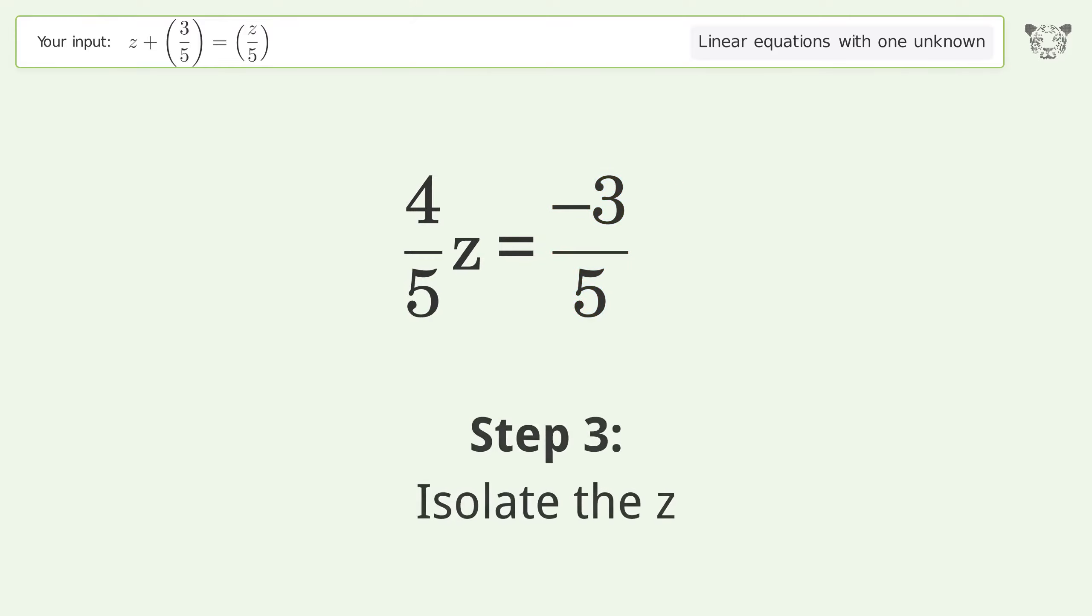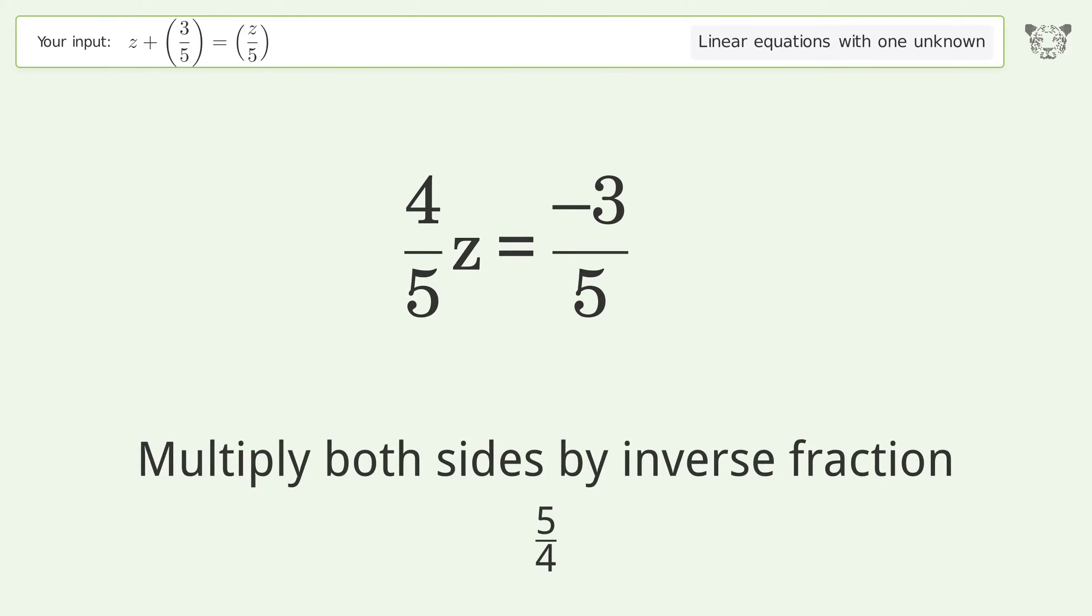Isolate the z. Multiply both sides by inverse fraction 5 over 4.